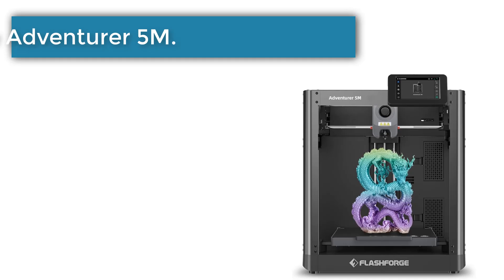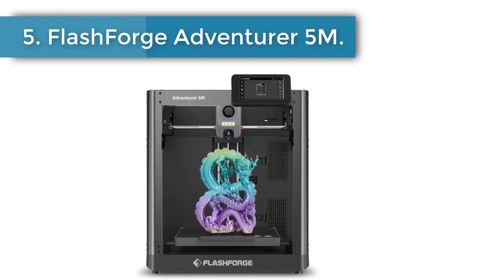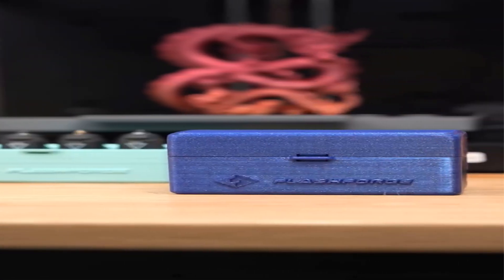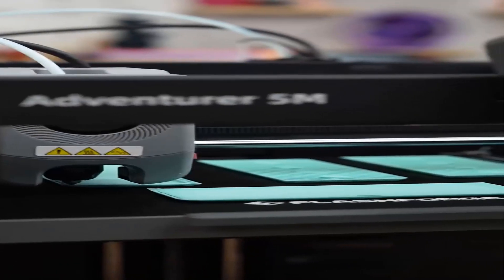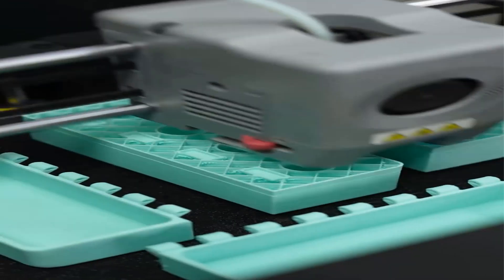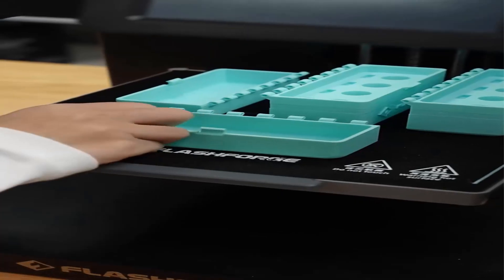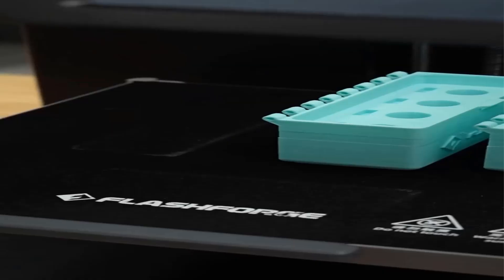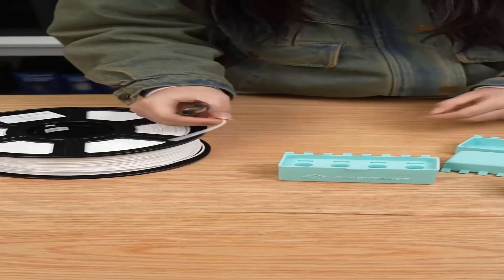Number 5: Flash Forge Adventurer 5M. The Adventurer 5M impressed us right out of the box. We had it up and running in just 10 minutes. The auto-leveling feature worked like a charm, saving us the headache of manual calibration. Our first prints came out smooth and stuck well to the bed.